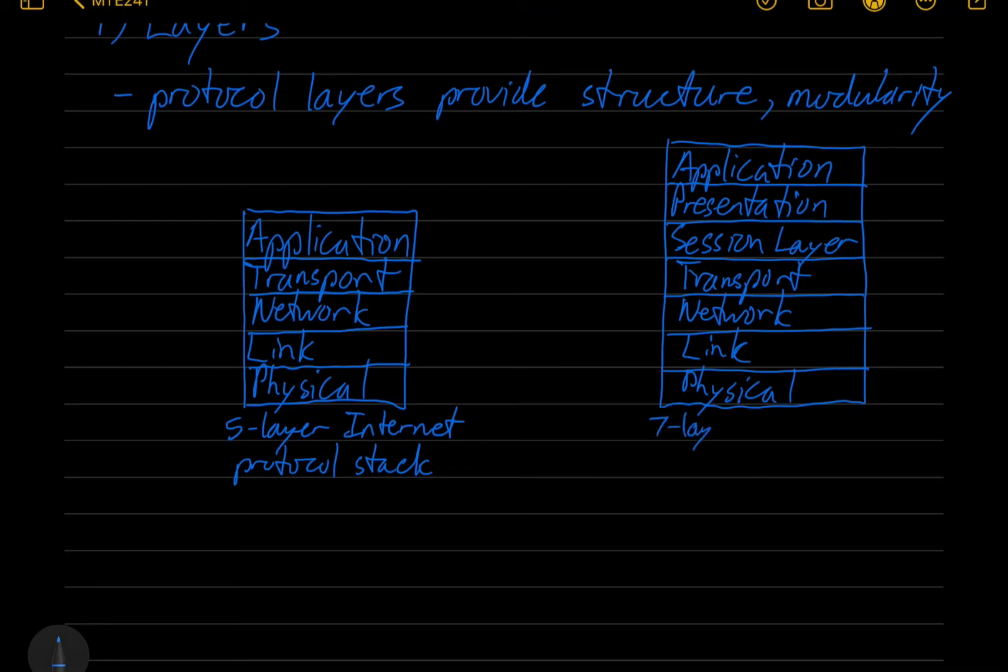This is the seven layer OSI protocol stack, also called the reference model. OSI stands for Open Systems Interconnect, and confusingly, it's published by ISO, the International Standards Organization, so it's the ISO OSI.